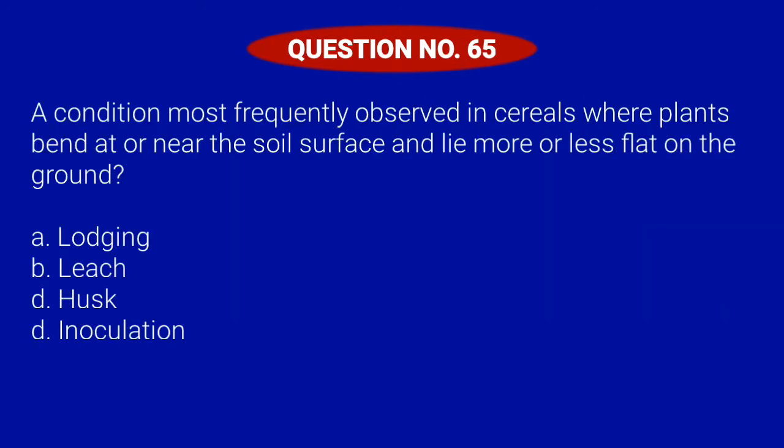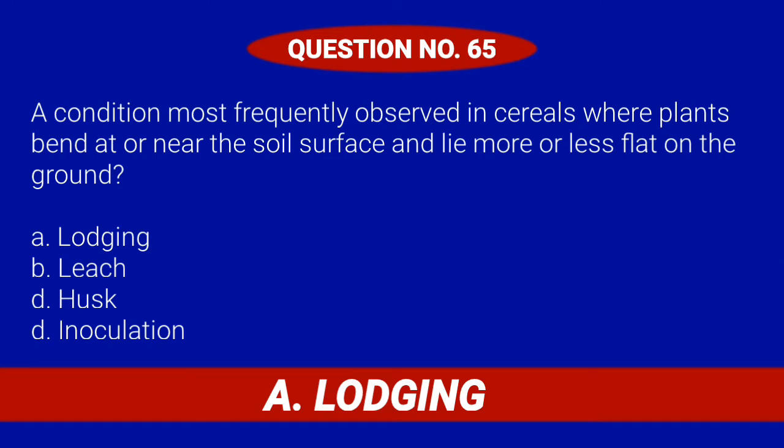Question number 65. A condition most frequently observed in cereals where plants bend at or near the soil surface and lie more or less flat on the ground. Letter A: Lodging. Letter B: Leech. Letter C: Husk. Or Letter D: Inoculation. Correct answer is Letter A: Lodging.